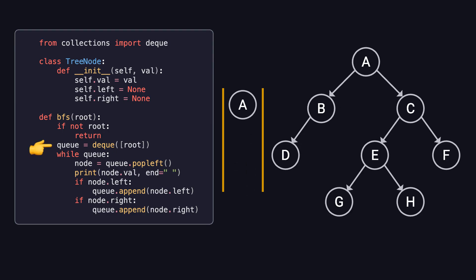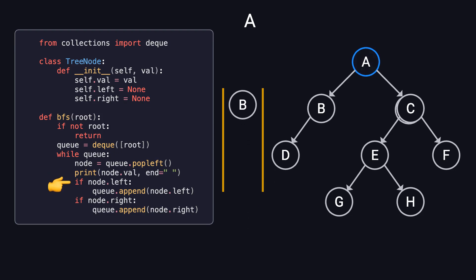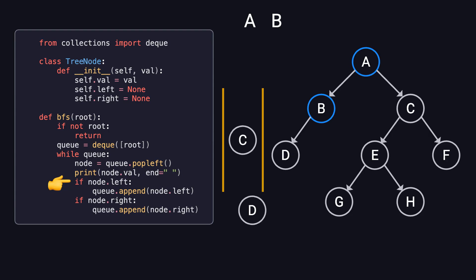Now let's walk through the BFS process using the binary tree on the right side of the screen. First, we enqueue the root node, A. Then, we enter a loop where we dequeue the first node, visit it, and enqueue its children. We start by removing A from the queue and visiting it. Next, we add A's children, B and C, to the queue. Now our queue contains B and C. Next, we dequeue B, visit it, and enqueue its child node, D. The queue now holds C and D.